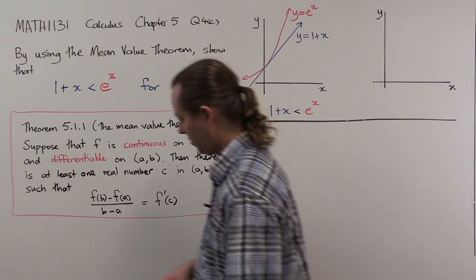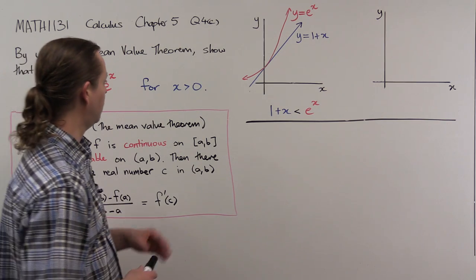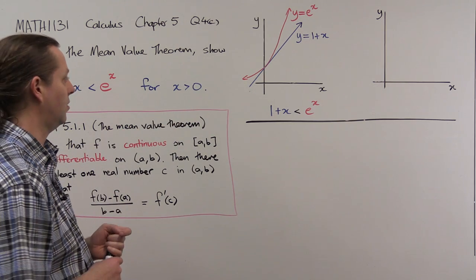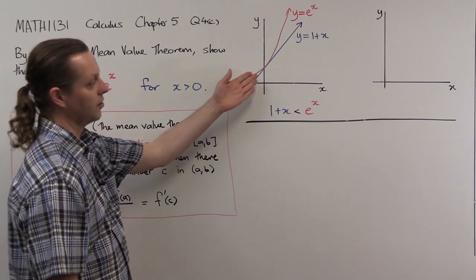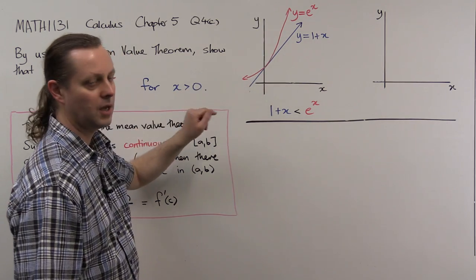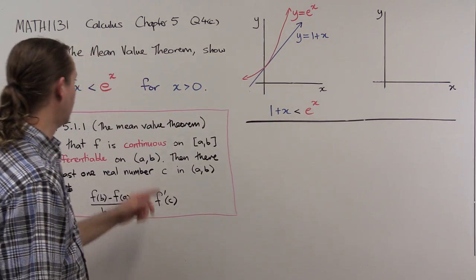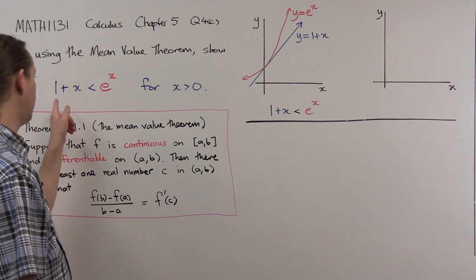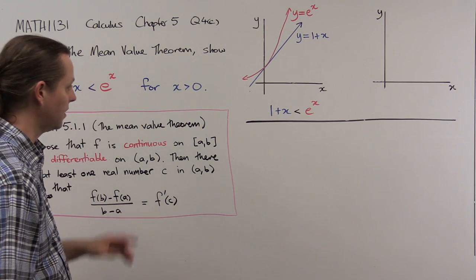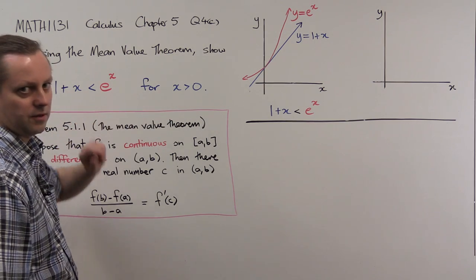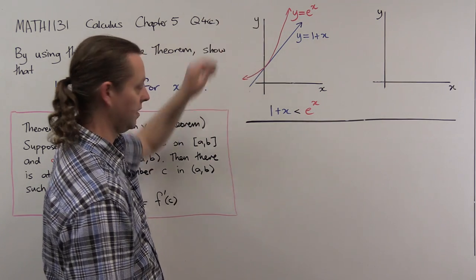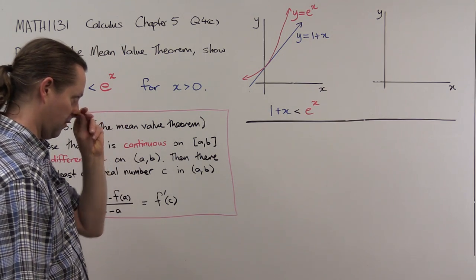We'd like to use this theorem to prove the inequality. I've drawn a graph here of a couple of functions: y equals e to the x, that's the red line, and y equals 1 plus x, the blue line. The inequality we are trying to prove says that the blue line should be lower than the red line — 1 plus x should be less than e to the x. We're only trying to prove that for x greater than 0, though it also appears to be the case for x less than 0.